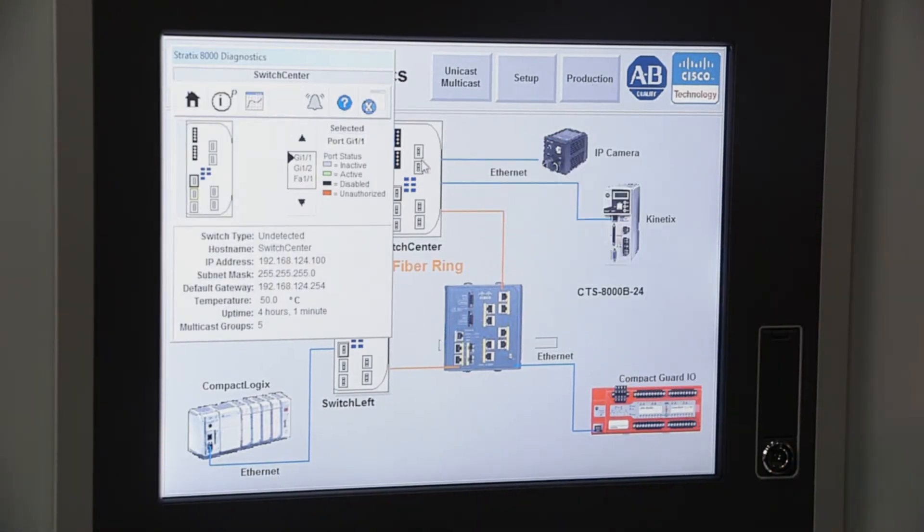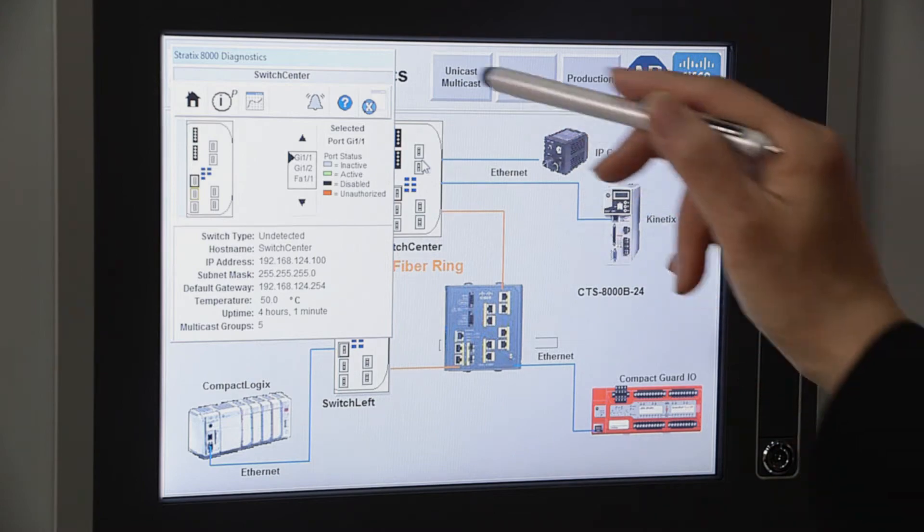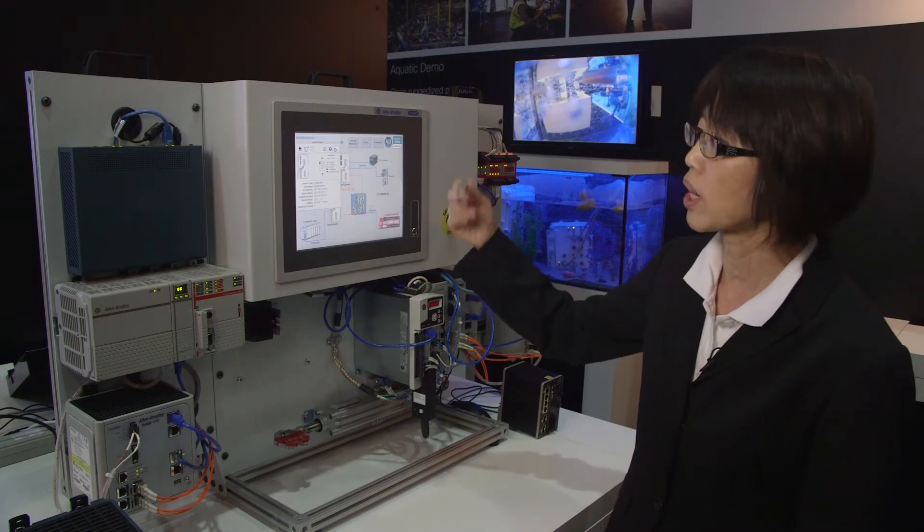Here you can see the switch. It has the basic information: which port is running, what is the IP address, and basic diagnostic information like temperature and runtime.